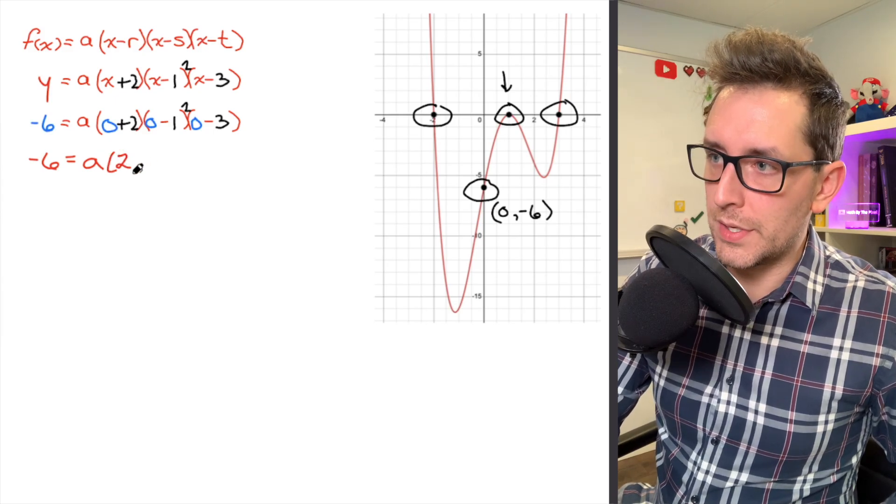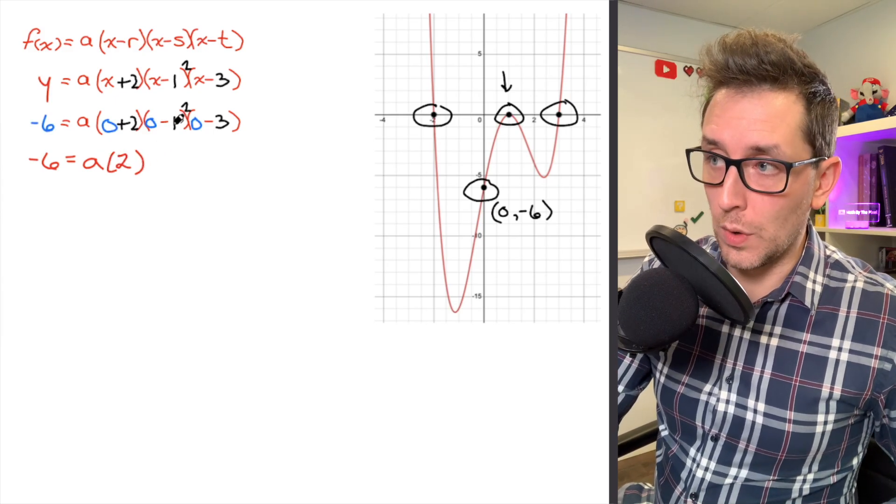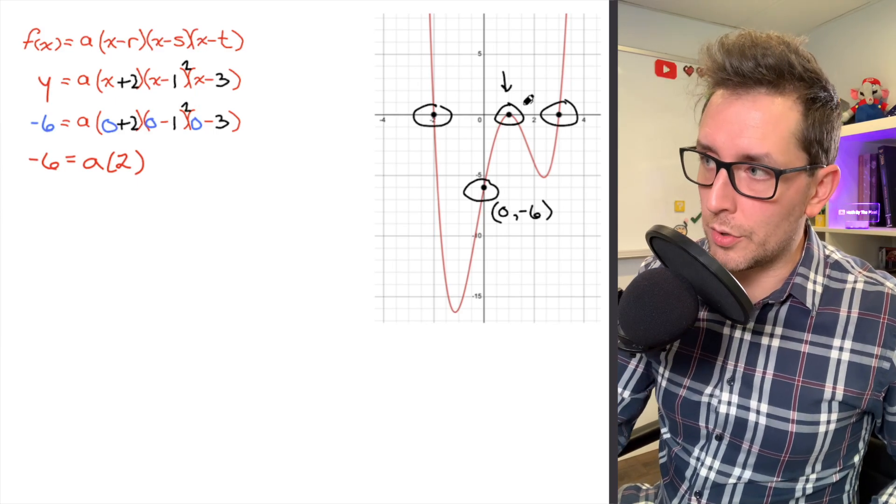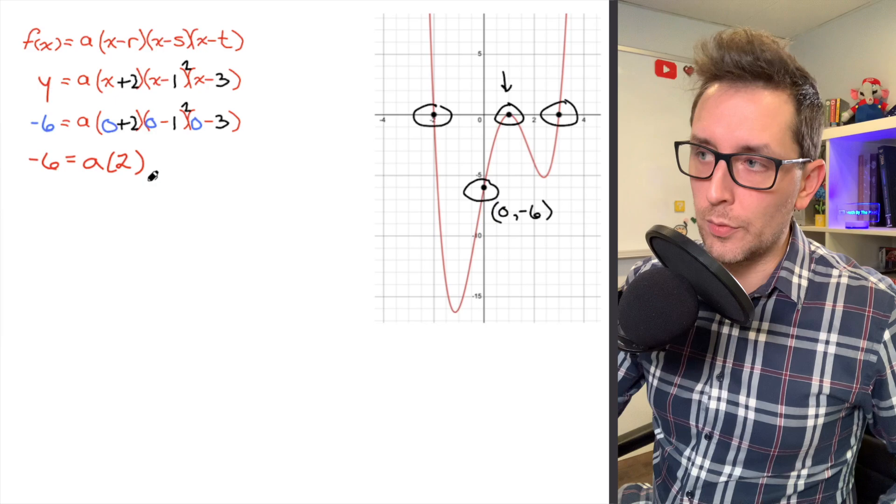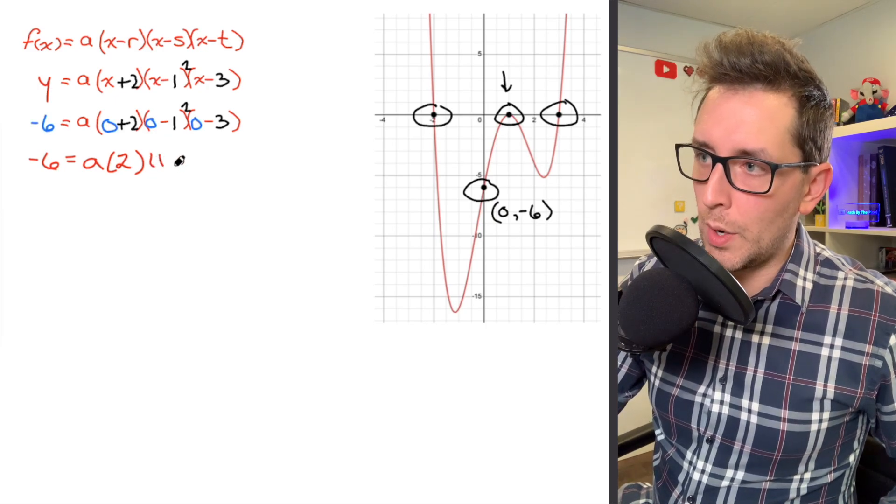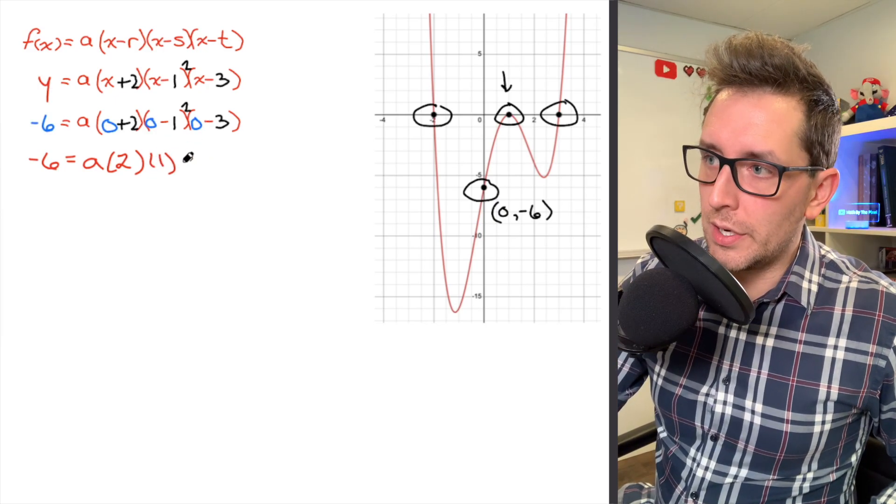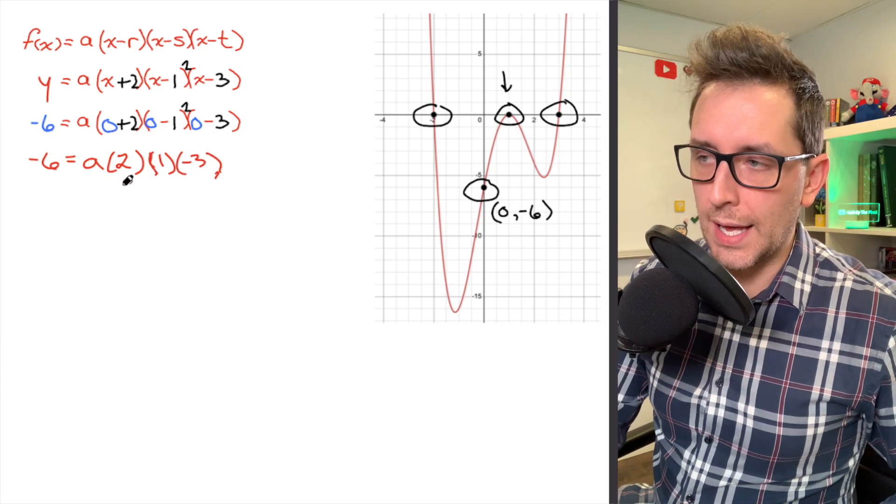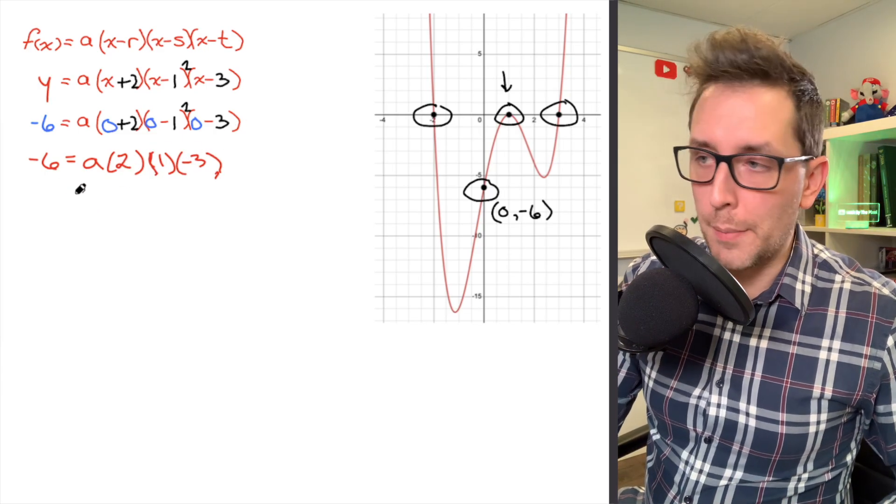And what I'm going to do is just go into each of these brackets and figure out what I'm working with. I've got 0 plus 2. I know that that's just going to be 2. I've got 0 minus 1, also known as negative 1. And I'm going to raise that to my power of 2, remember that order 2 x-intercept. I'm raising negative 1 to the power of 2. Negative 1 to the power of 2 is just going to be 1. So I'm going to write a 1. And I've got 0 minus 3, also known as negative 3.